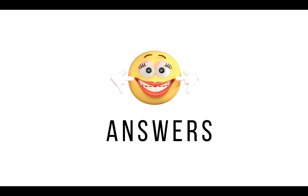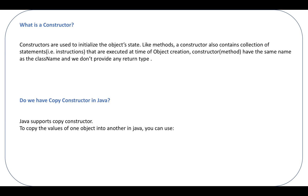So what is a constructor? Constructors are used to initialize the object state. Like methods, a constructor also contains a collection of statements — instructions or a piece of code — that gets executed at the time of object creation. A constructor has the same name as the class name and we don't provide any return type for it.